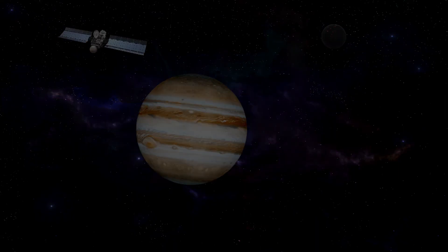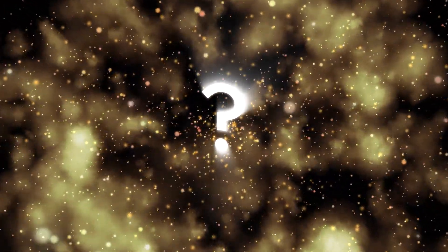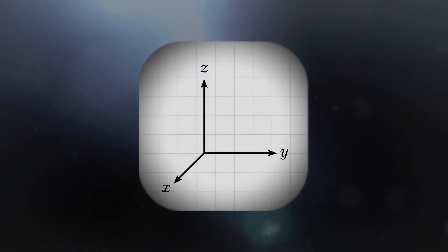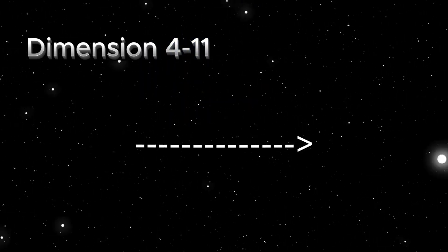Now here's where it connects to the Big Bang. String theory doesn't only need the three dimensions of space and one of time. For the math to work, it requires additional dimensions - possibly 10 or even 11 in total. Most of these dimensions are hidden from our view, curled up so small that we cannot detect them.